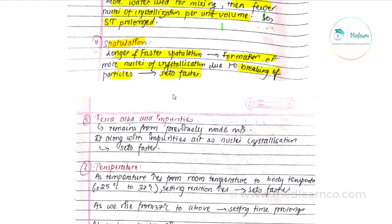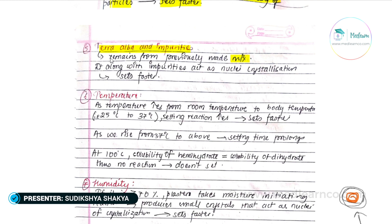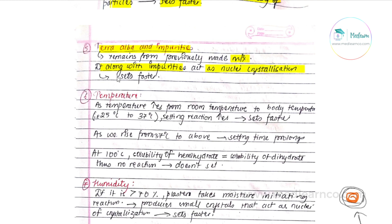Fifth factor is impurities. Old or impure material left in the mix — remaining particles along with impurities — can act as nuclei of crystallization, which will accelerate the setting reaction.